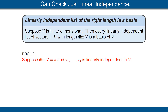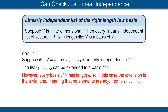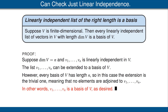Let's look at the proof. Suppose the dimension of V is n, and we have vectors V1 up to Vn that form a linearly independent list in V. In a previous video, we discussed the theorem saying any linearly independent list can be extended to a basis of V. So we can extend this list V1 up to Vn to a basis of V. However, every basis of V has length n, so in this case the extension is a trivial one — no elements are adjoined. Conclusion: V1 up to Vn is already a basis of V. If a linearly independent list has length equal to the dimension of V, we do not need to check the spanning condition.